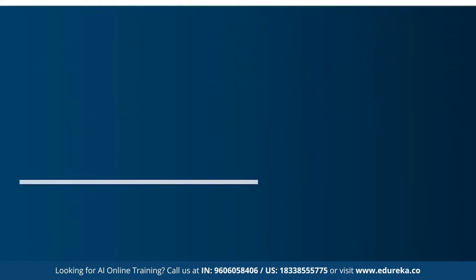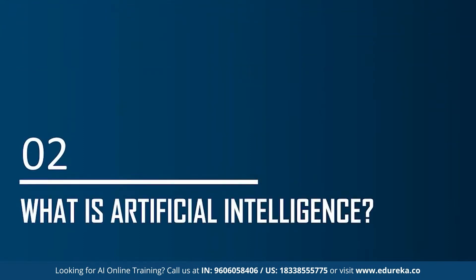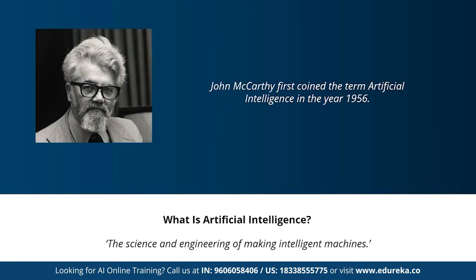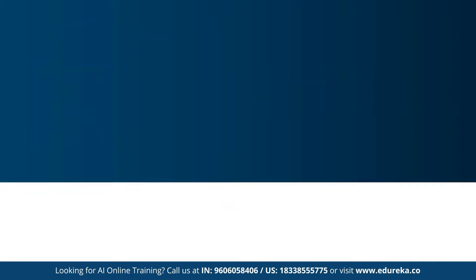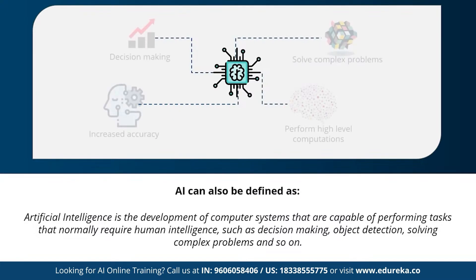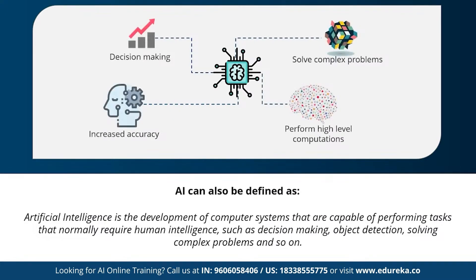Now let's understand what exactly artificial intelligence is. The term was first coined by John McCarthy, who defined AI as the science and engineering of making intelligent machines. In other words, artificial intelligence is the development of computer systems capable of performing tasks that require human intelligence, such as decision making, object detection, and solving complex problems.